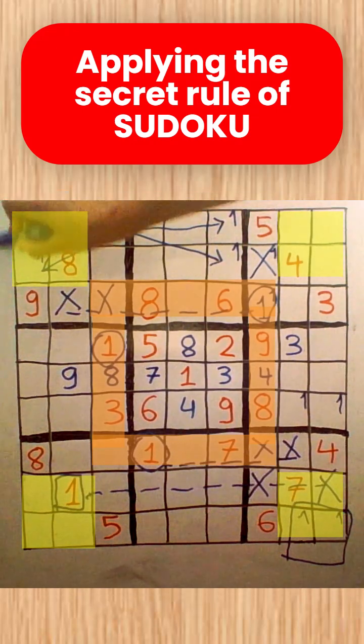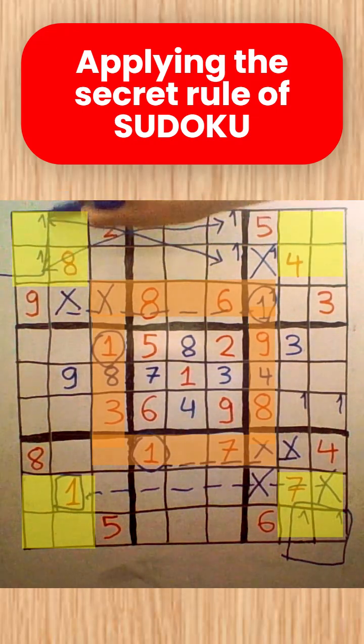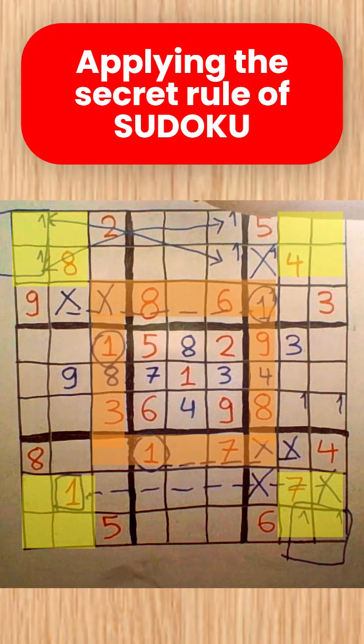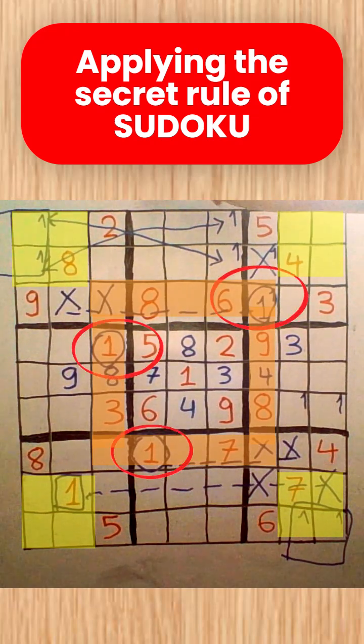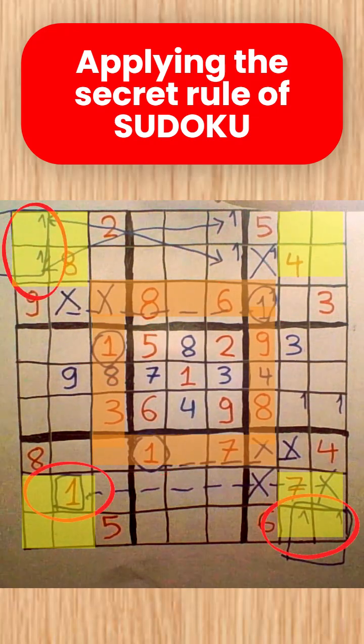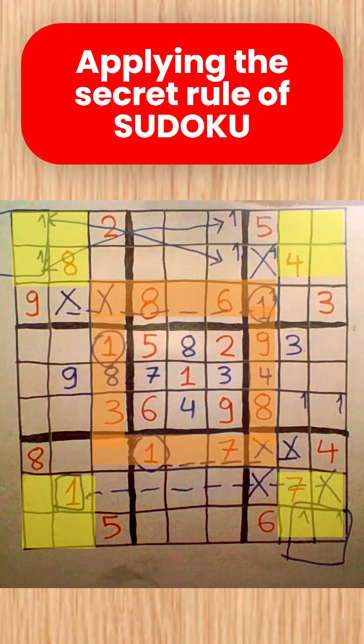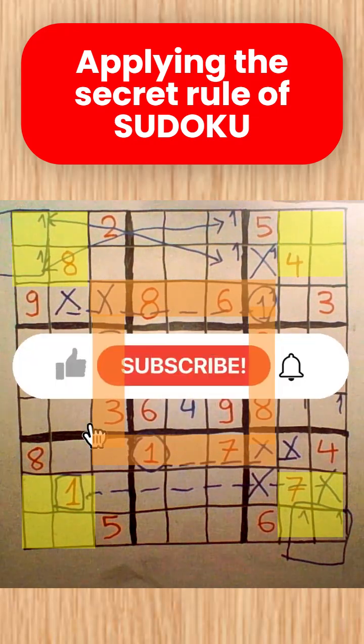It becomes obvious that in the upper left corner, you also have a 1 for sure. Now, we know that there are exactly 3 1s in the orange area. So, there are also 3 in the yellow one. So, the rule helped us determine all the 1s and the solution now is easier. Thanks for watching.